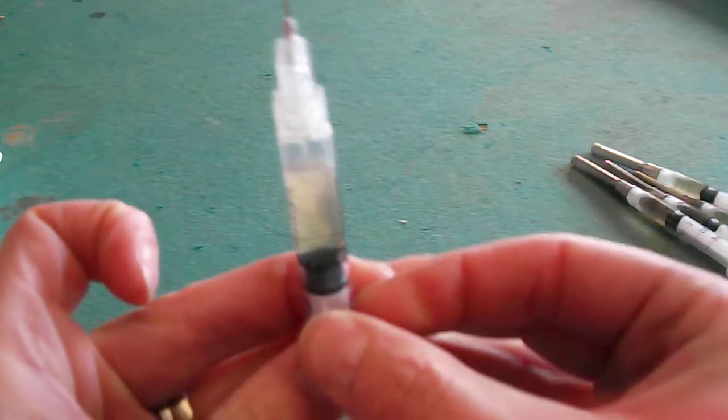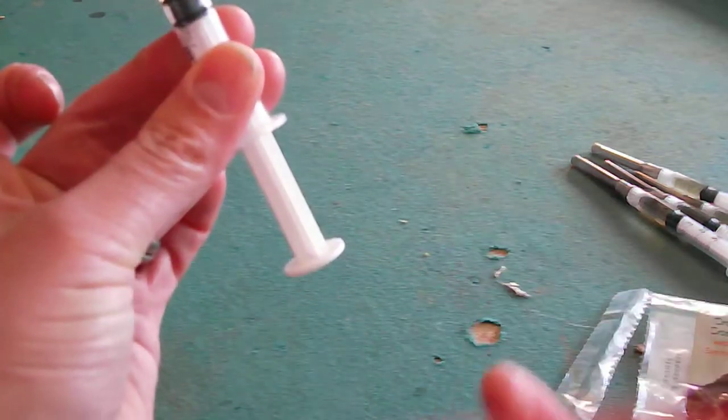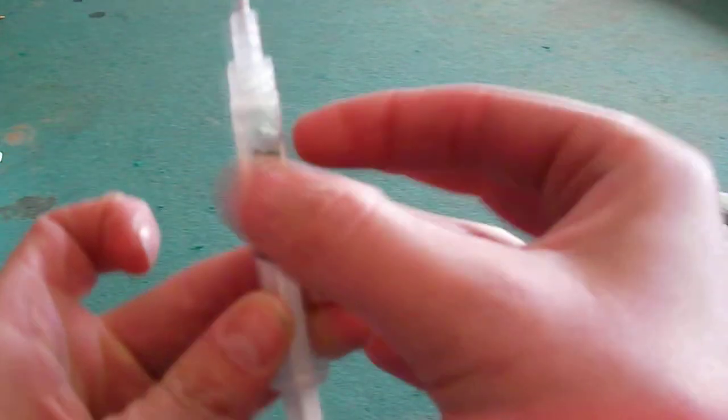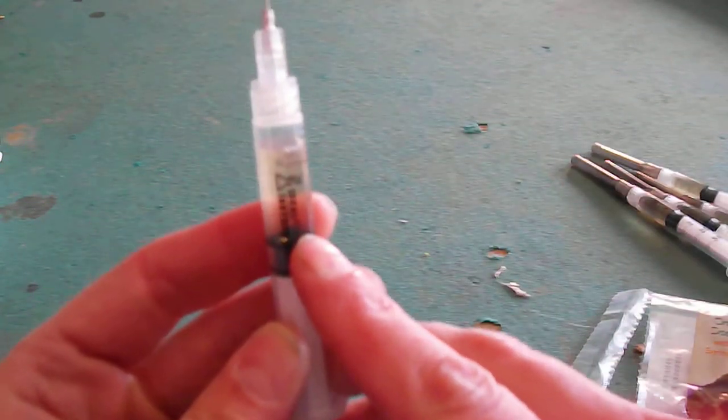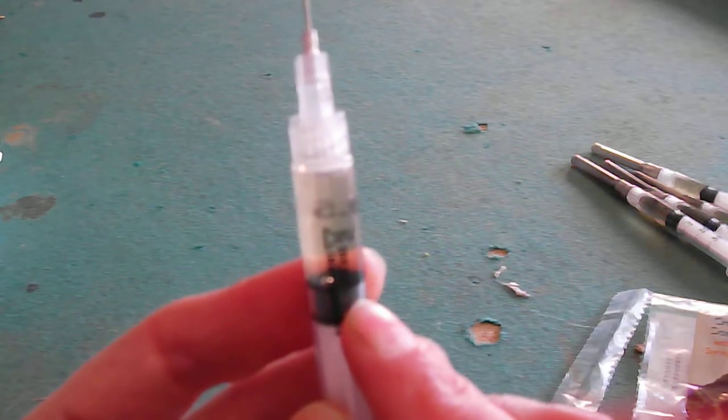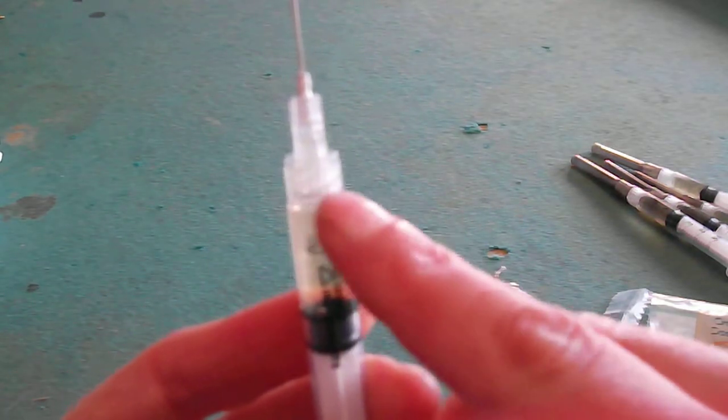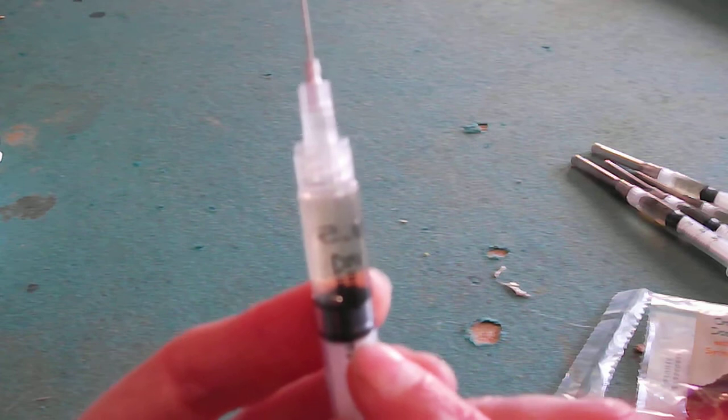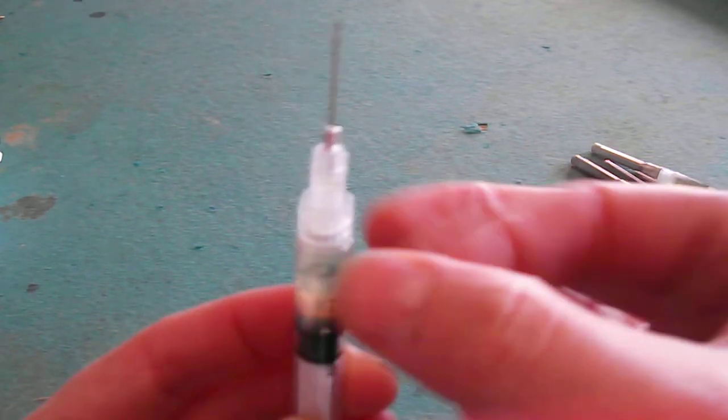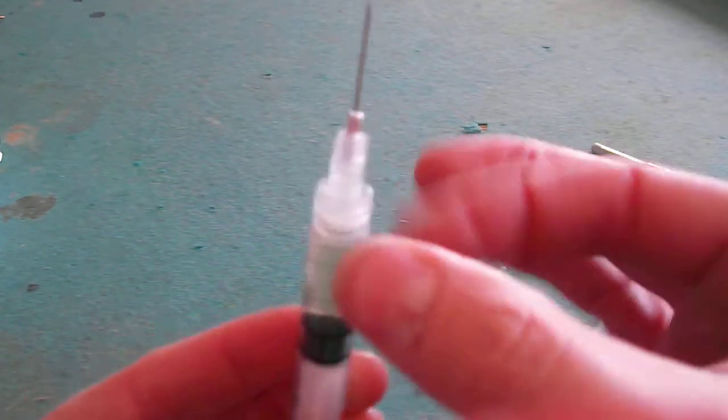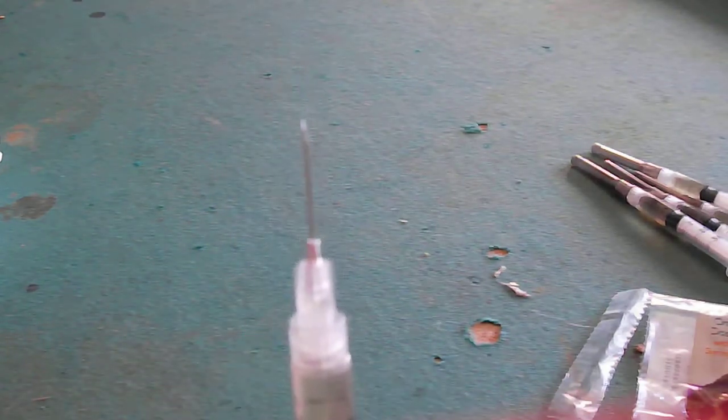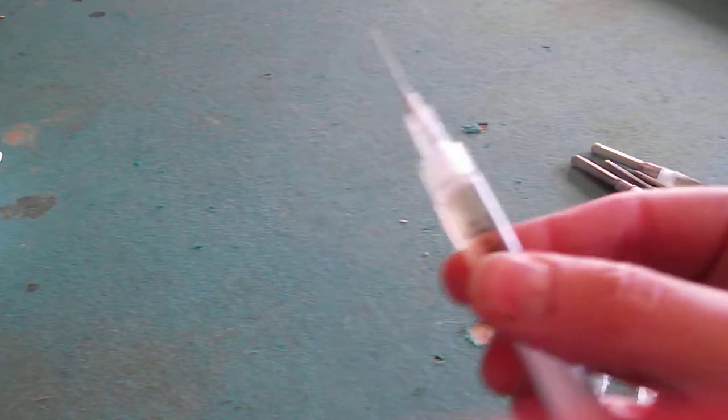Flick it to get the air out before you push this up. Then start pushing the air out. You'll see it start going up into the needle. Stop it for a sec. Flick out the air bubbles again. Give it a little squirt out there. Just a couple drips and you're ready to go.